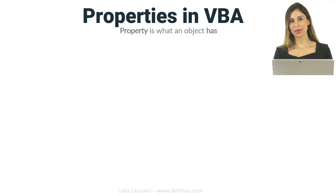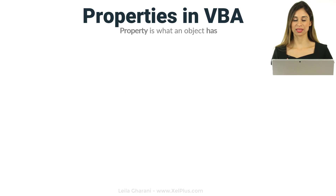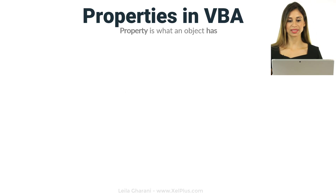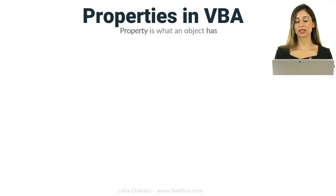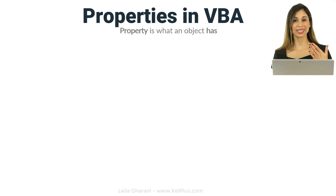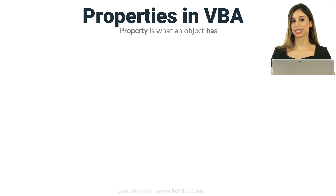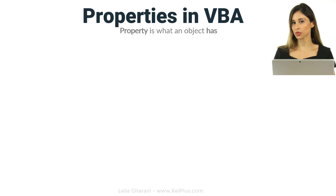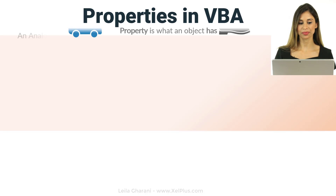Properties and methods help you do things with objects. A property is basically what an object has, and a method is what you do with an object — it's what an object does.